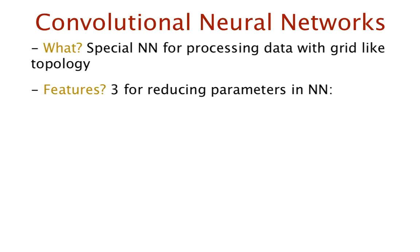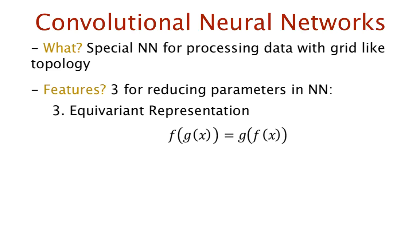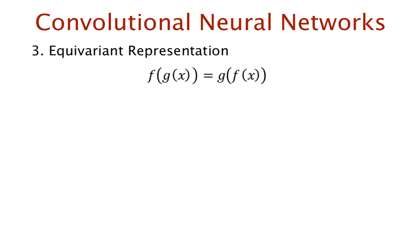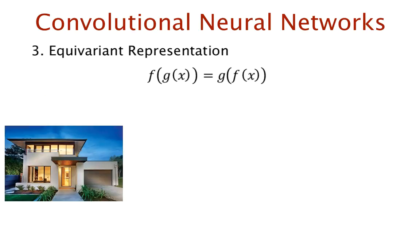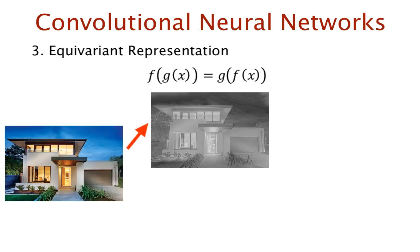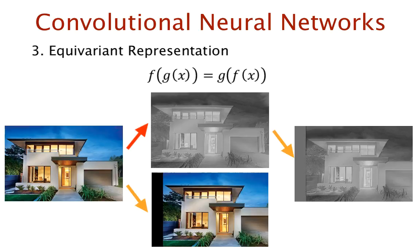Another feature of convolutional neural networks is equivariant representation. A function f is said to be equivariant with respect to another function g if f of g of x is equal to g of f of x for an input x. Let's take an example to understand this. Consider that there is some image i, where f is the convolution operation and g is the image translation operation. Convolution is equivariant with respect to translation. This means that convolving the image and then translating it will lead to the same result as first translation and then convolving it.